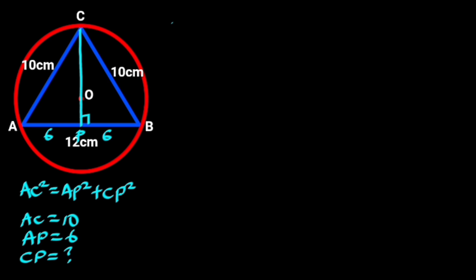Substituting these values in the formula, it follows that 10 square equals 6 square plus CP square. 10 squared is 100, and 6 squared is 36. So 100 is equal to 36 plus CP square.